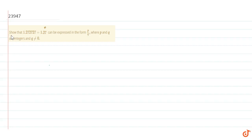What is the problem? Show that this number can be expressed in the form p by q, where q is not equal to 0 and p and q are integers.